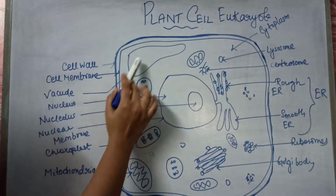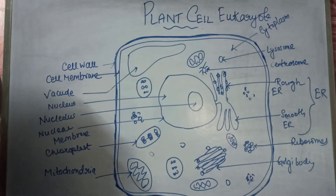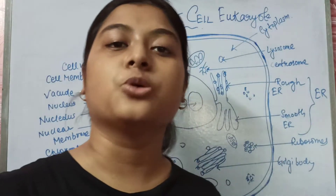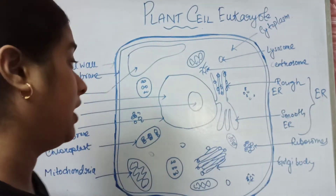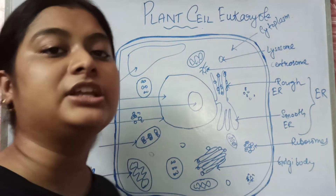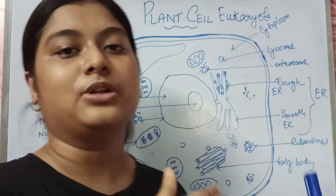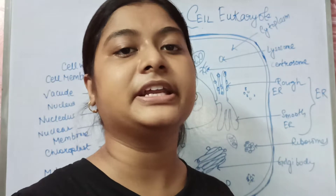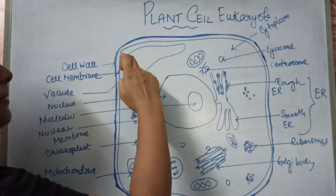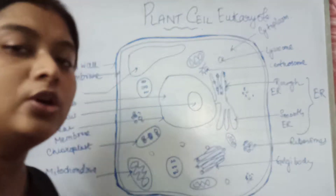Next is the vacuole, one of the cytoplasmic organelles present in the plant cell. The main functions of the vacuole are: first, it helps in storage of sugars and carbohydrates; and second, it helps in maintaining turgor pressure — that is the inward as well as outward pressure — and maintaining turgidity.